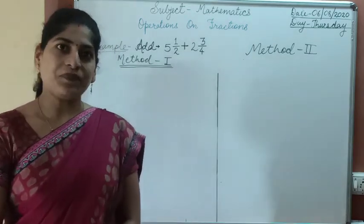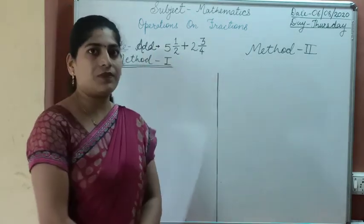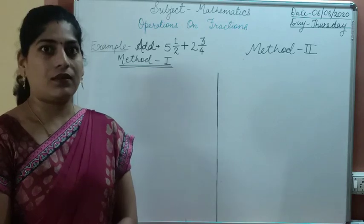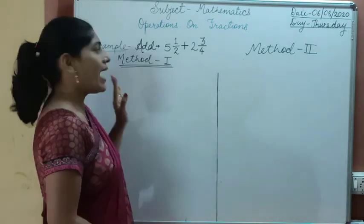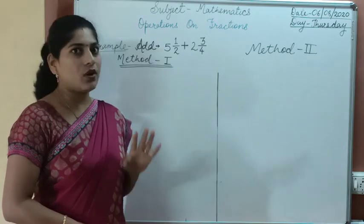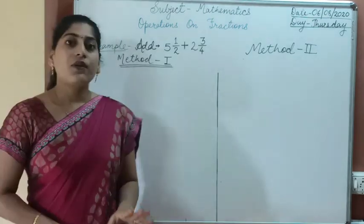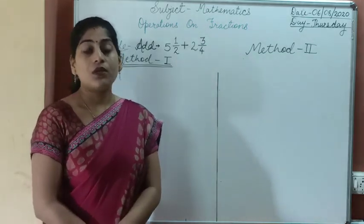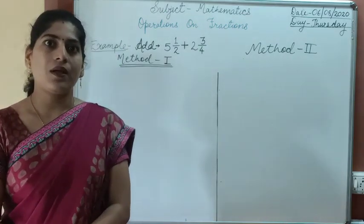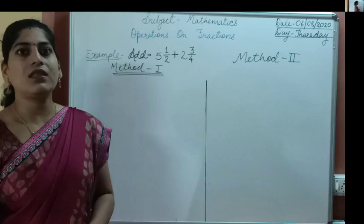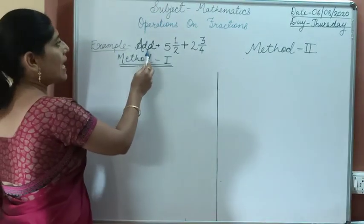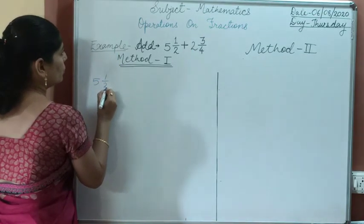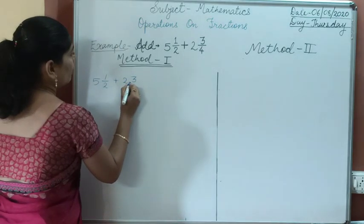In the last session we have learned operations on fractions — addition and subtraction. We have seen the first method. There are two methods to solve addition and subtraction, so in the last video we already saw method number one. Here we will learn both methods. Question number one: 5¹/₂ plus 2³/₄.